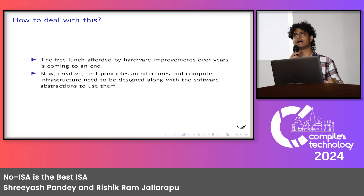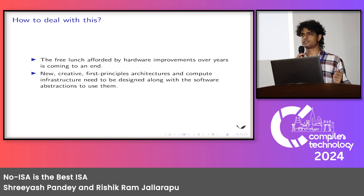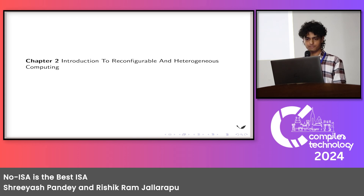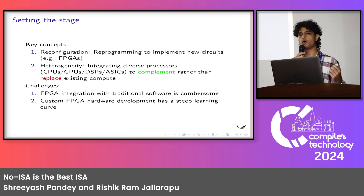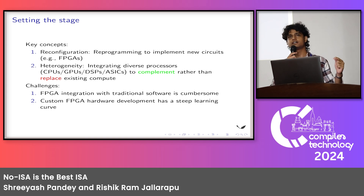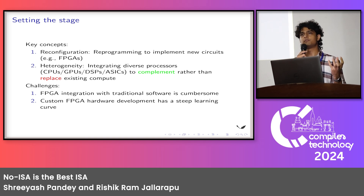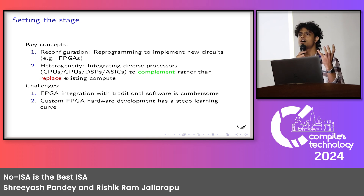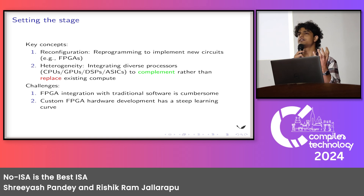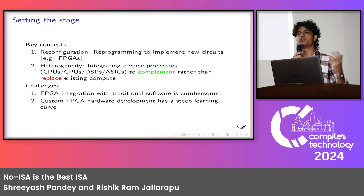In conclusion, the free lunch accorded by Moore's Law through improving hardware technology is coming to an end, and new first-principle architectures need to be thought of. In order to talk about these new architectures, we laid down two key ideas: Reconfiguration and Heterogeneity. Reconfiguration is the idea that there is a processor that can be programmed to implement a newer circuit — and I am talking circuits, not programs. Heterogeneity is the idea that a good compute system integrates all processors of different specialties together into one integrated solution. Heterogeneity answers the question of whether we should get rid of CPUs and GPUs — we should not. They are very good at what they do, and a good computer has all of these.